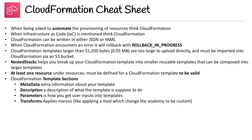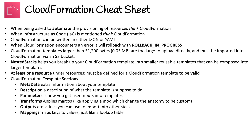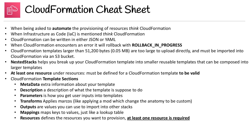Transform is like applying a mod which can change the anatomy to be custom — a good example of that is SAM, the Serverless Application Model. Then you have Outputs, which are values you can use to import into other stacks; Mappings, which map keys to values just like a lookup table; and Resources, where you define the resources you want to provision. At least one resource is required.